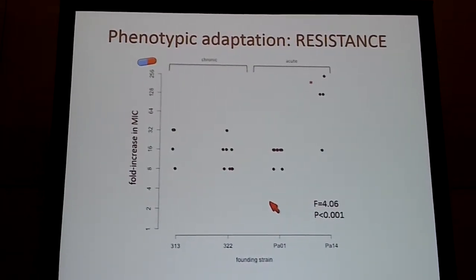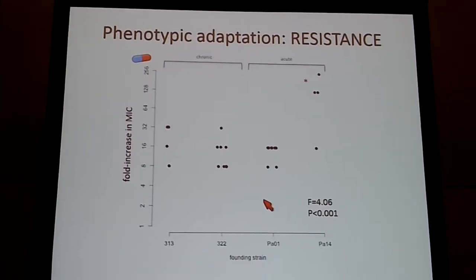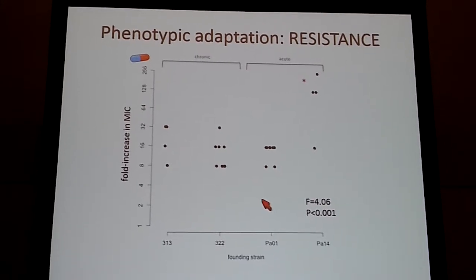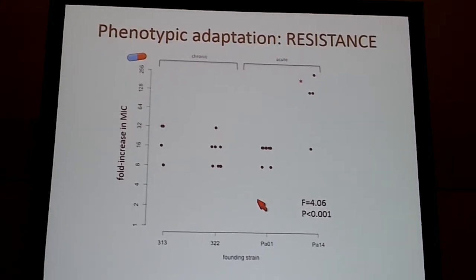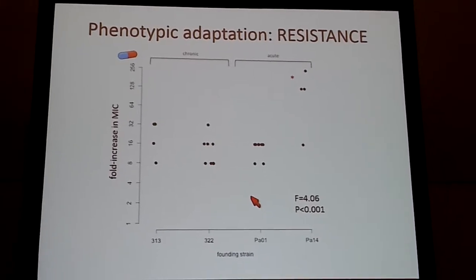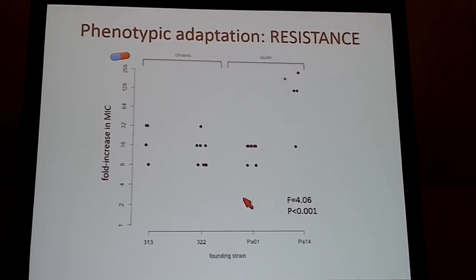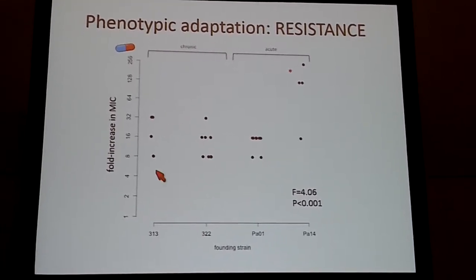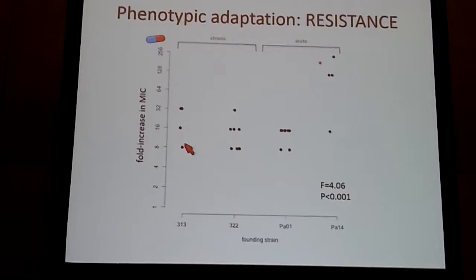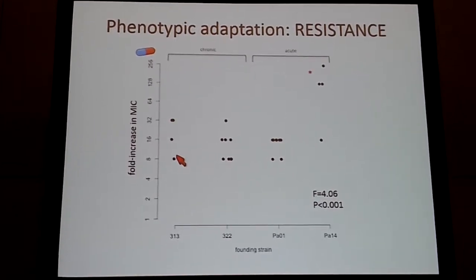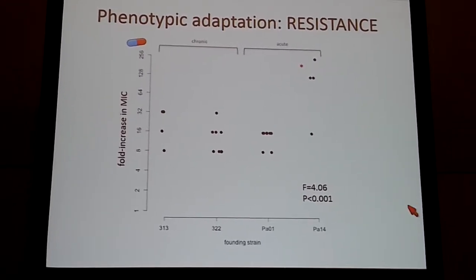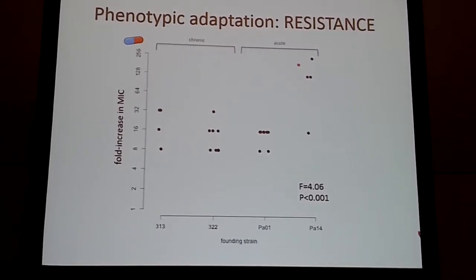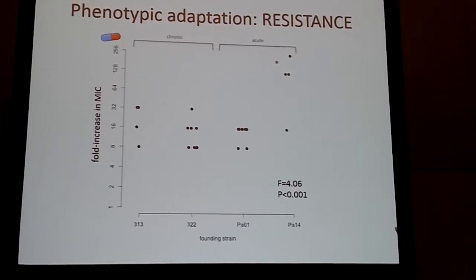First I asked: are they resistant? Our expectation is that they'll be able to grow and become resistant. The measure on the y-axis is a fold increase in MIC, or minimum inhibitory concentration — the minimum concentration of ciprofloxacin that inhibits growth. Each point is a replicate population. All populations became resistant, but strains evolving from PA14, one of the lab-adapted strains, became the most resistant.